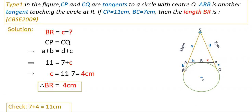Since CP equals CQ, we have A + B = C + D. Here A + B = 11 cm (given as CP), and D = 7 cm (given as BC). So 11 = 7 + C, therefore C = 11 - 7 = 4 centimeters. So BR = 4 centimeters. We can verify: 4 + 7 = 11 centimeters, confirming tangent lengths are equal.